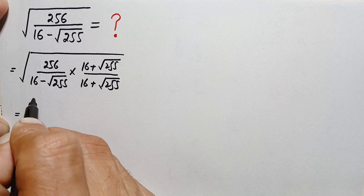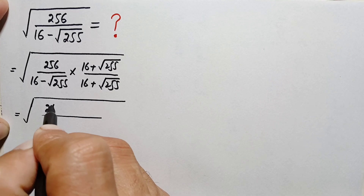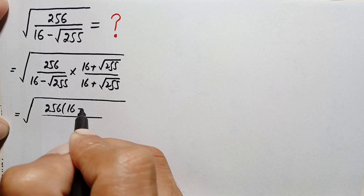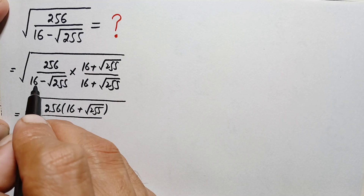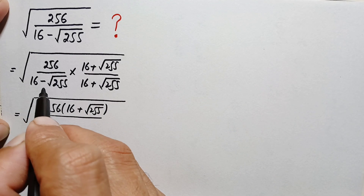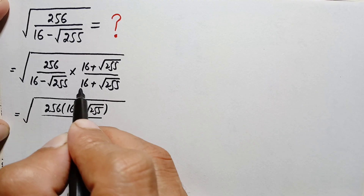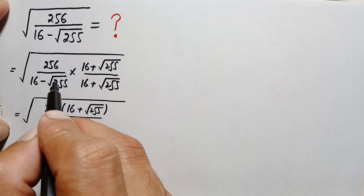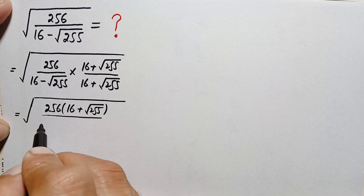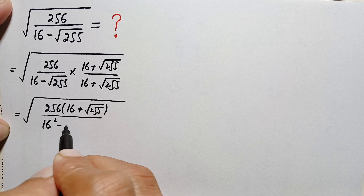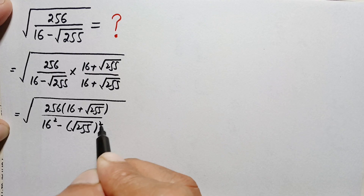Let's multiply numerator by numerator and denominator by denominator. This expression will become square root of 256 times (16 plus square root of 255), divided by (16 minus square root of 255) times (16 plus square root of 255). This is like a minus b times a plus b, which equals a squared minus b squared.